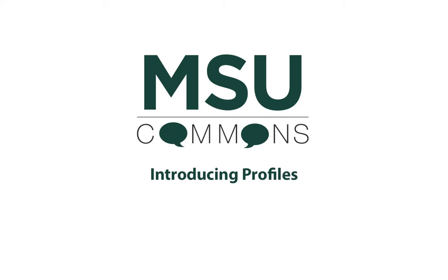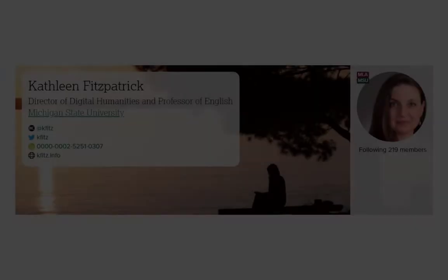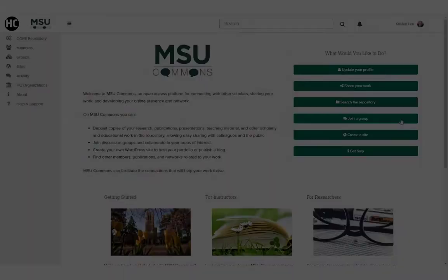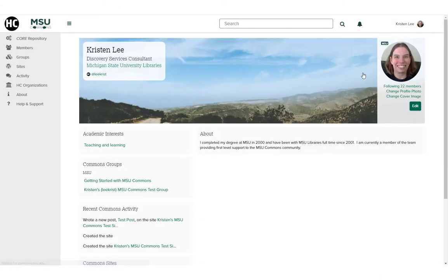All MSU Commons users have a profile. You can build it out as much or as little as you like. Users can add their own profile photos, as well as links to social media and ORCID accounts, websites, and academic interests.